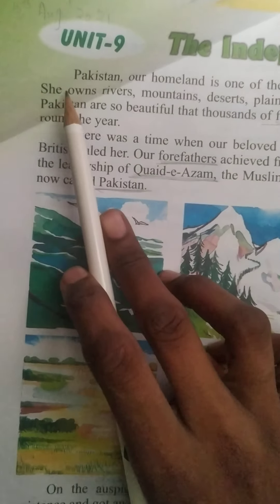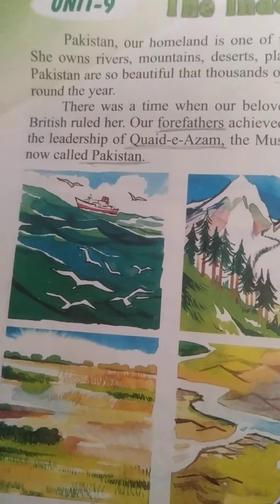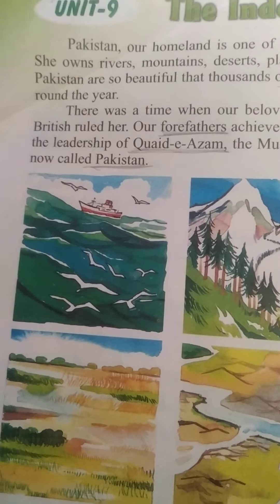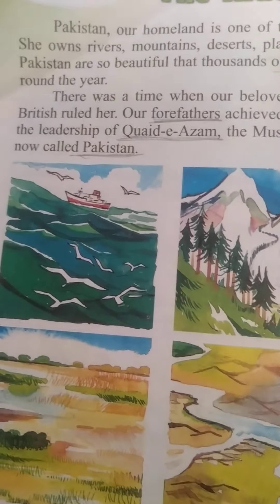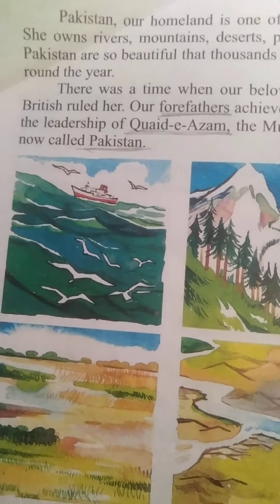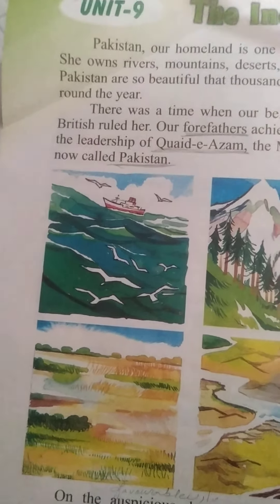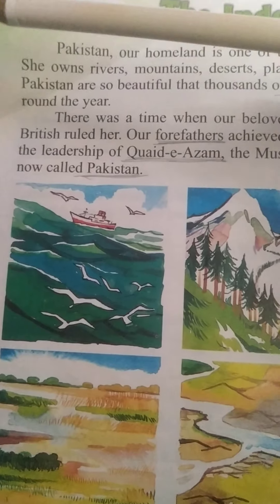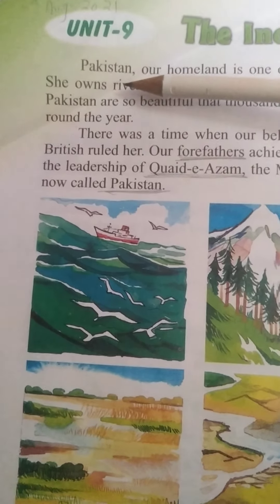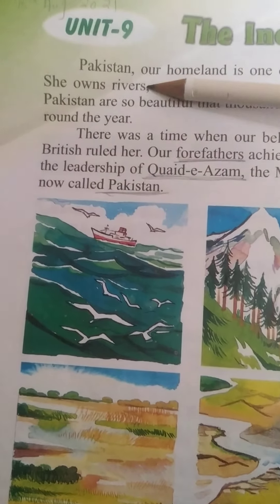She owns rivers, mountains, deserts, plains, and sea. We use 'she' for the country — we represent her as a nation. Pakistan owns rivers, mountains, deserts, plains, and sea.